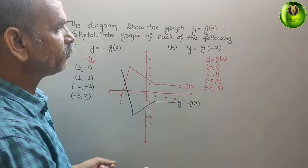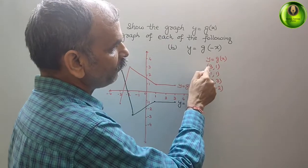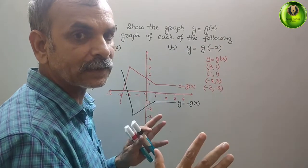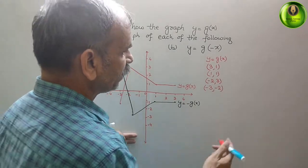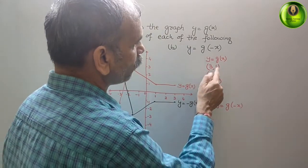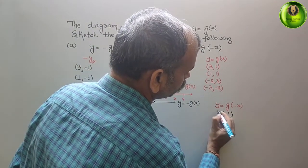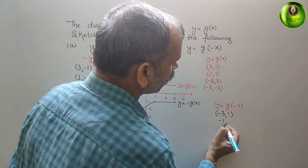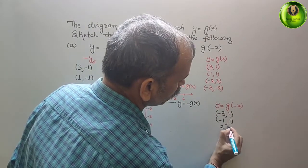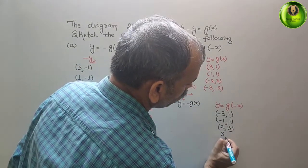Next comes y = g(-x). That means we will change the sign of x only — nothing else, y is the same. So for y = g(-x): the point (3, 1) becomes (-3, 1). The point (1, 1) becomes (-1, 1). The point (-2, 3): minus of minus 2 is 2, so it becomes (2, 3). And (-3, -2): minus of minus 3 is 3, so it becomes (3, -2).